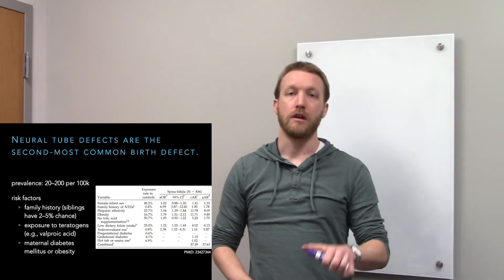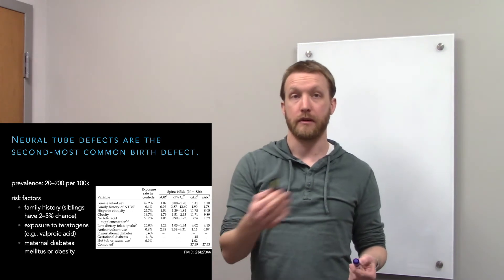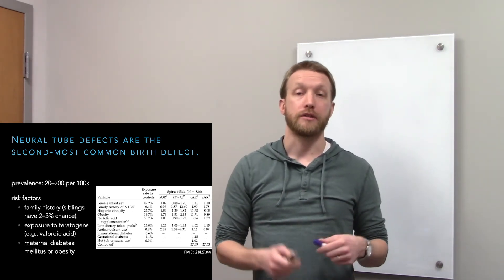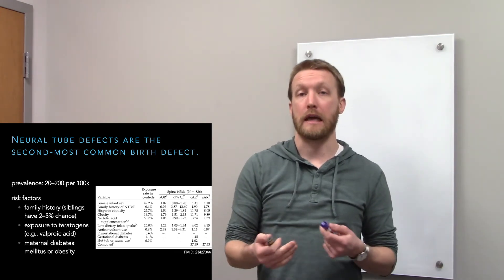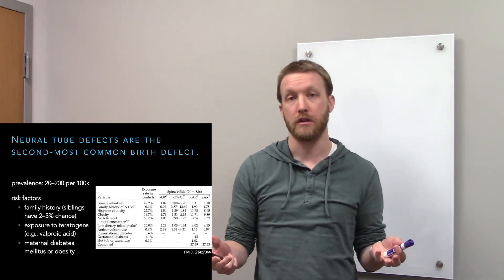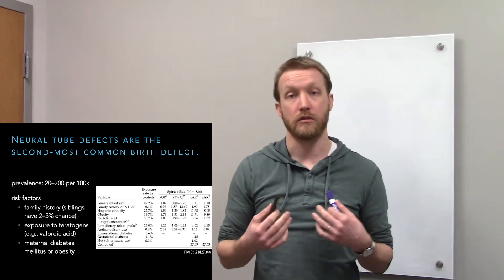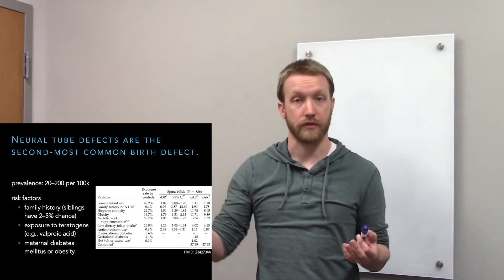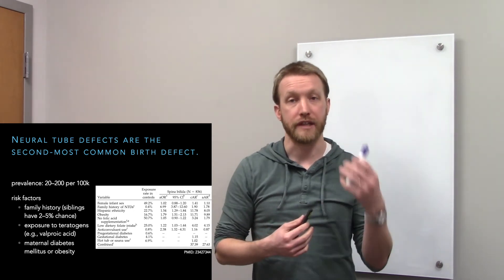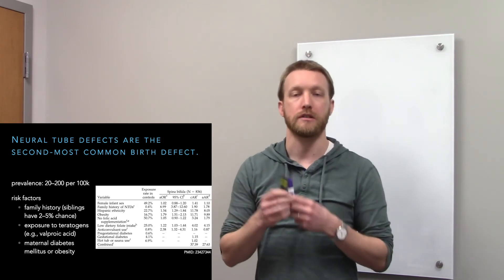As far as birth defects go, neural tube defects are fairly common. You get about 20 to 200 per 100,000. Of course, there are different risk factors that can change the likelihood of a neural tube defect. Family history is an obvious one. The process of neurulation and spine development are encoded genetically. Environmental factors play a role, but your genetics do as well. If there's a genetic problem that affects neurulation, that gets handed down. So family history increases risk.